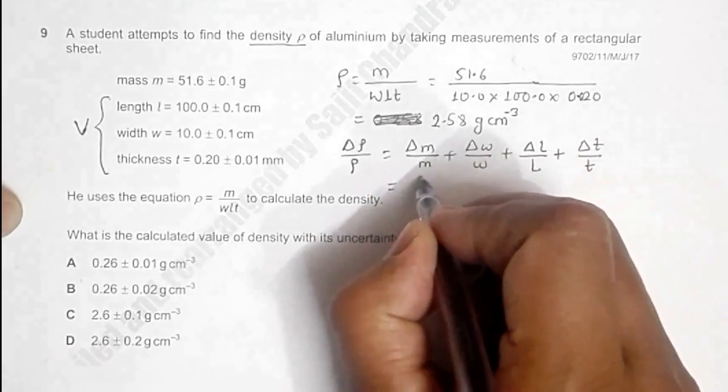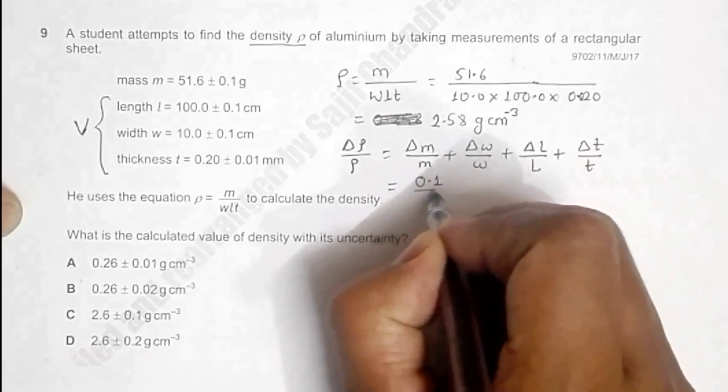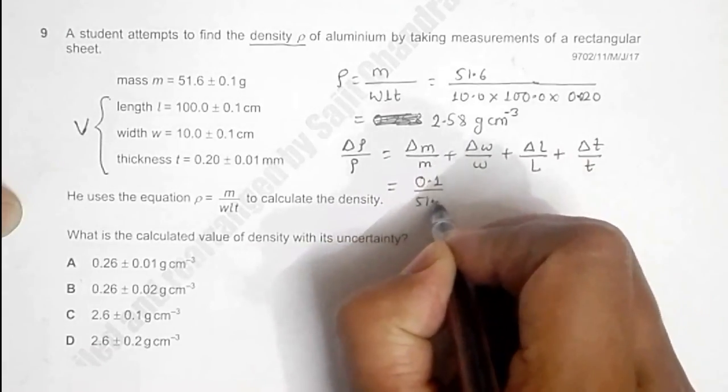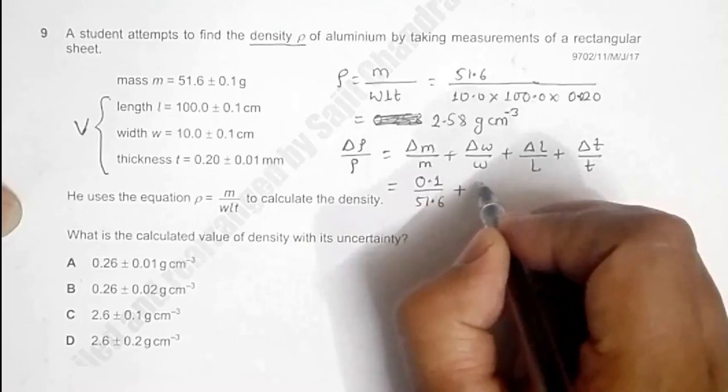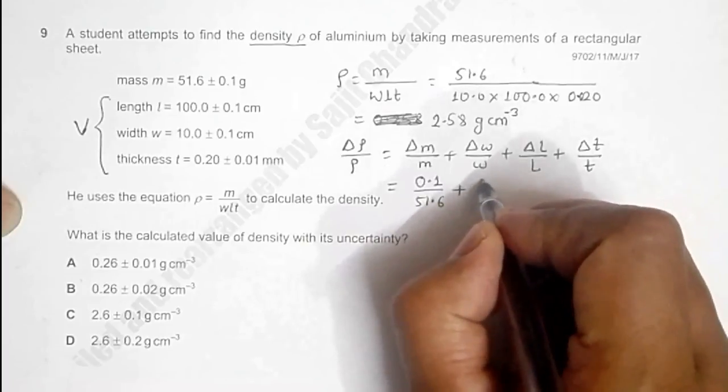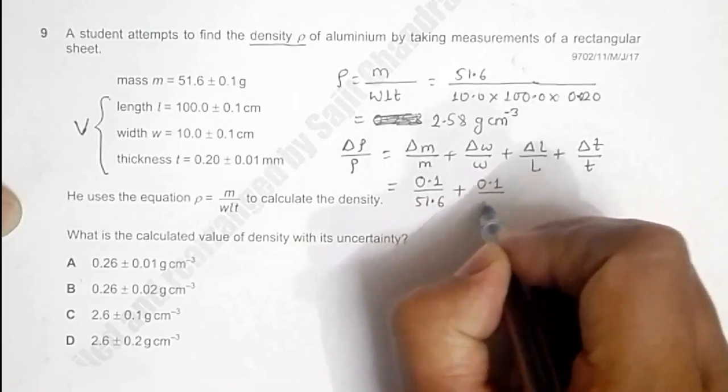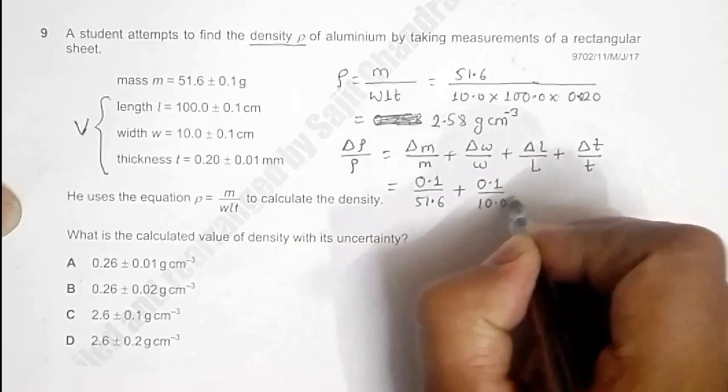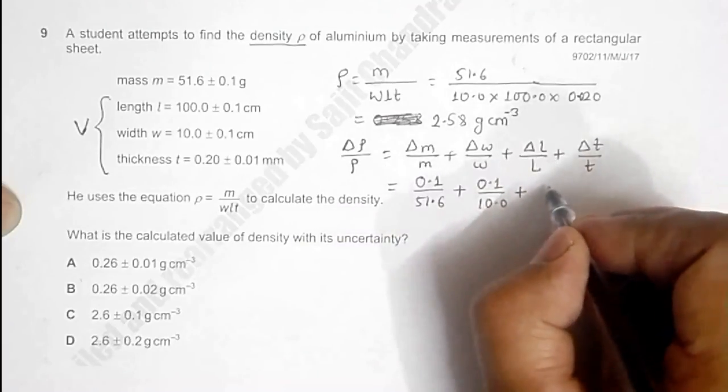ΔM/M is 0.1/51.6 plus ΔW/W is 0.1/10.0 plus